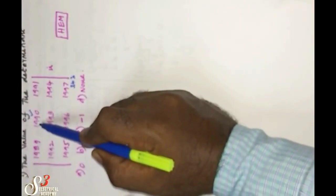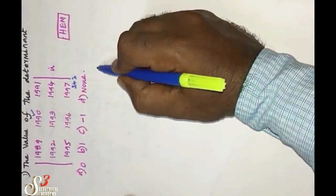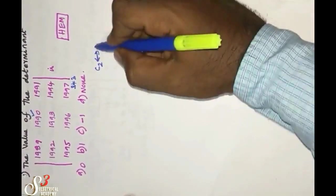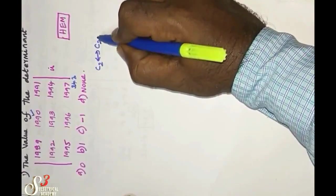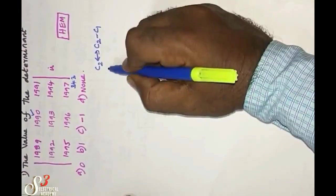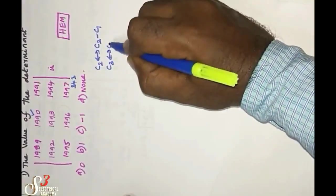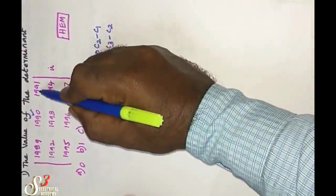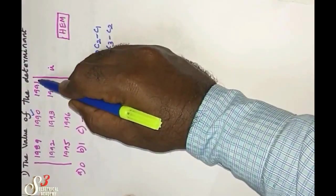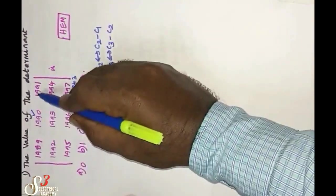I'll perform the operations: C2 will be C2 minus C1, and before that C3 will be C3 minus C2. If you subtract 1991 from 1990, we get one. Correct. 1994 minus 1993 equals one, 1997 minus 1996 equals one.